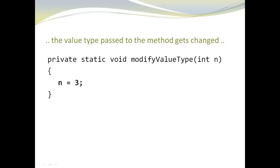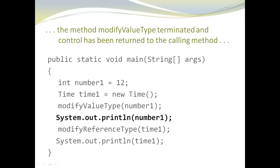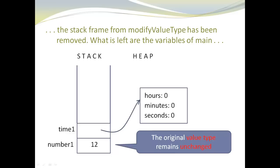You can see the declaration of modifyValueType. All it does is receive an argument of type integer and modify it — it just assigns it the value 3. After the assignment, n is no longer 12; it's now 3. At this point, modifyValueType reaches the end of the body and we are back in the main method. The next statement is a print statement, and the stack frame has disappeared because the method has terminated. Number1 is still there and no longer grayed out. The original value type remains unchanged — number1 is still 12, so printing number1 will print 12.